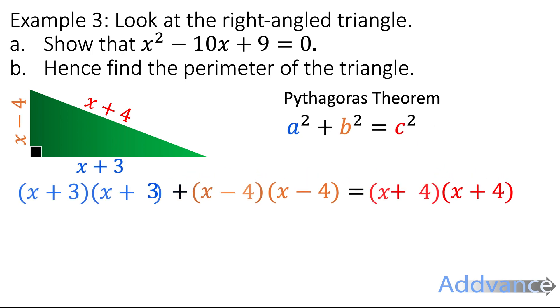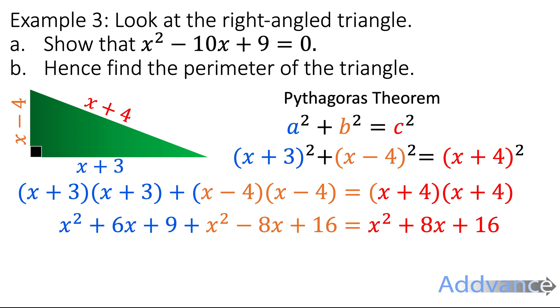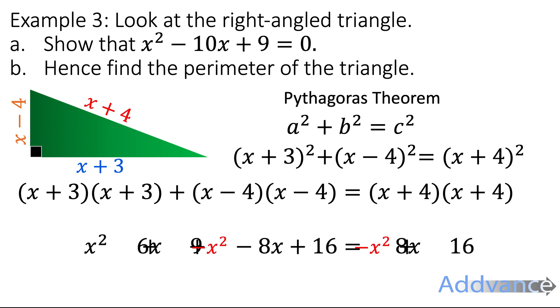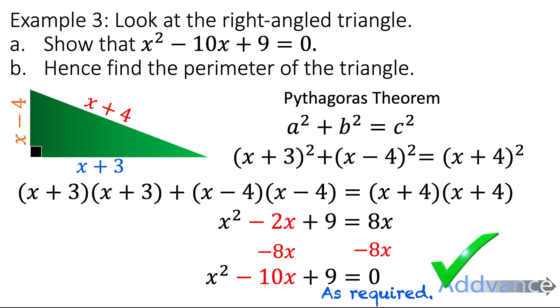We can expand those brackets like this, and we'll get this equation here. And we're going to have to simplify this step by step. We'll start by subtracting x² from both sides, and those x² will disappear. Then we're going to subtract 16 from both sides, and those 16s will disappear. And then we're going to combine the x's, 6x - 8x is -2x. And then finally we can take 8x from both sides, which reveals x² - 10x + 9 = 0.